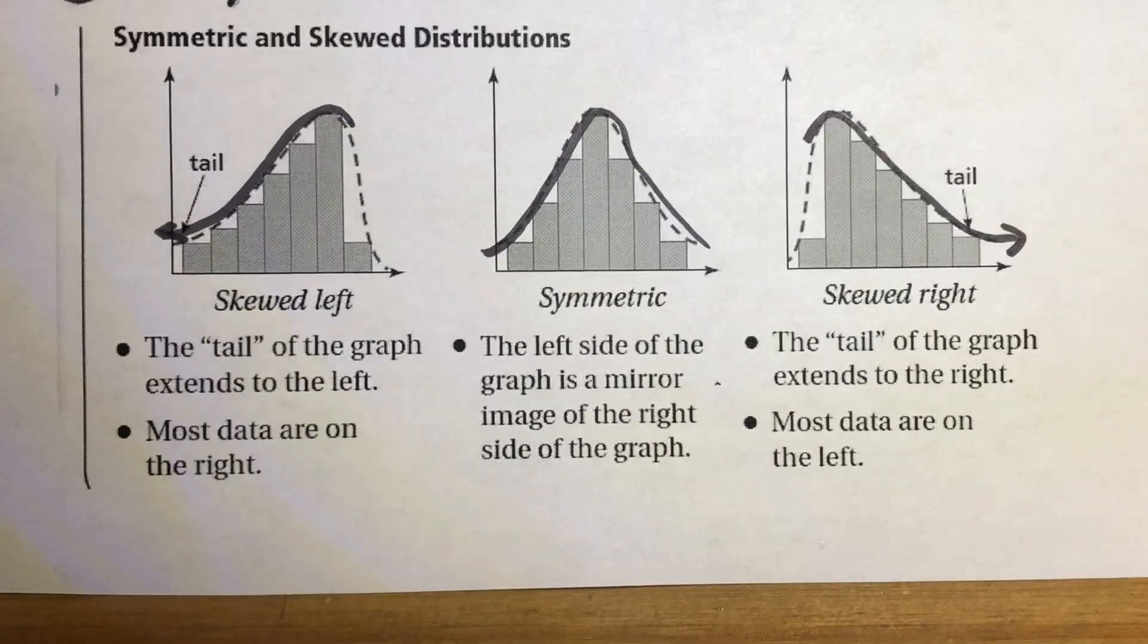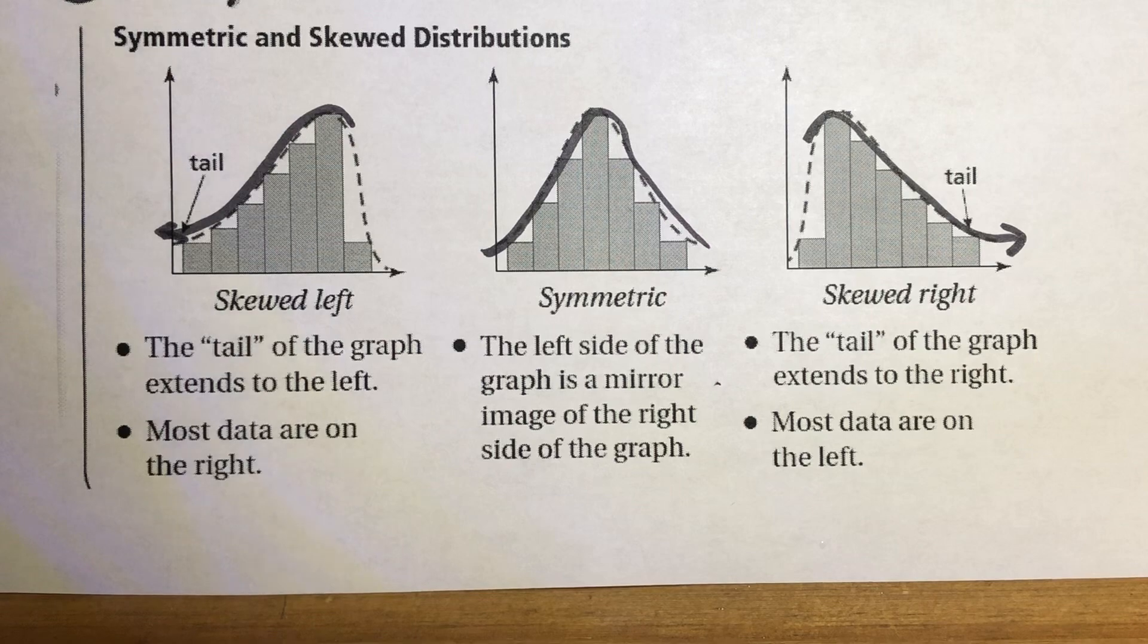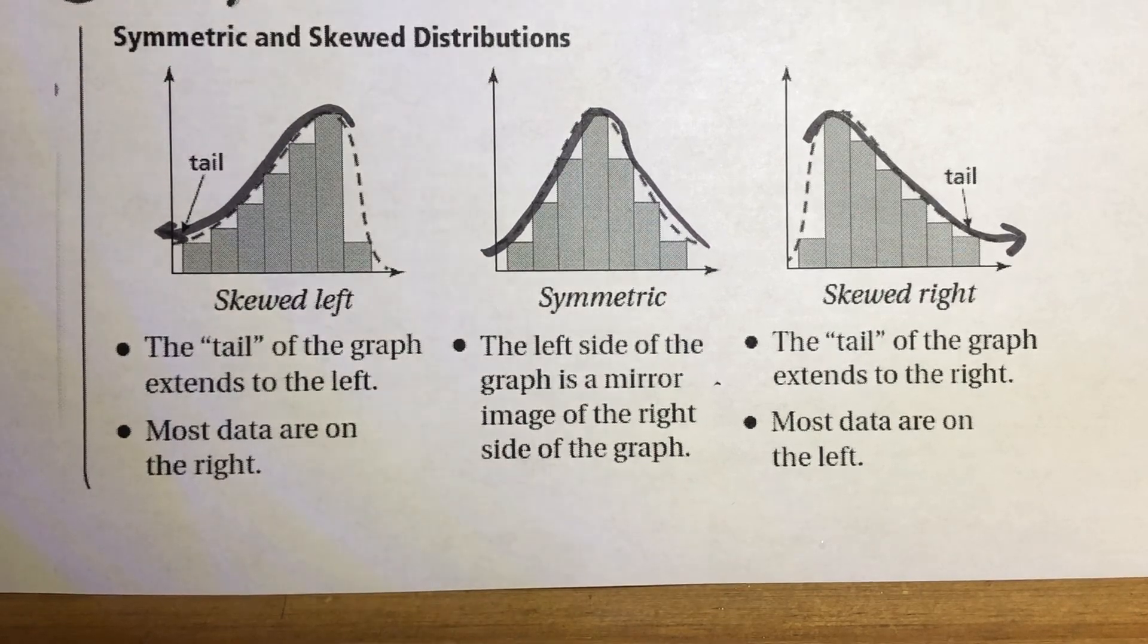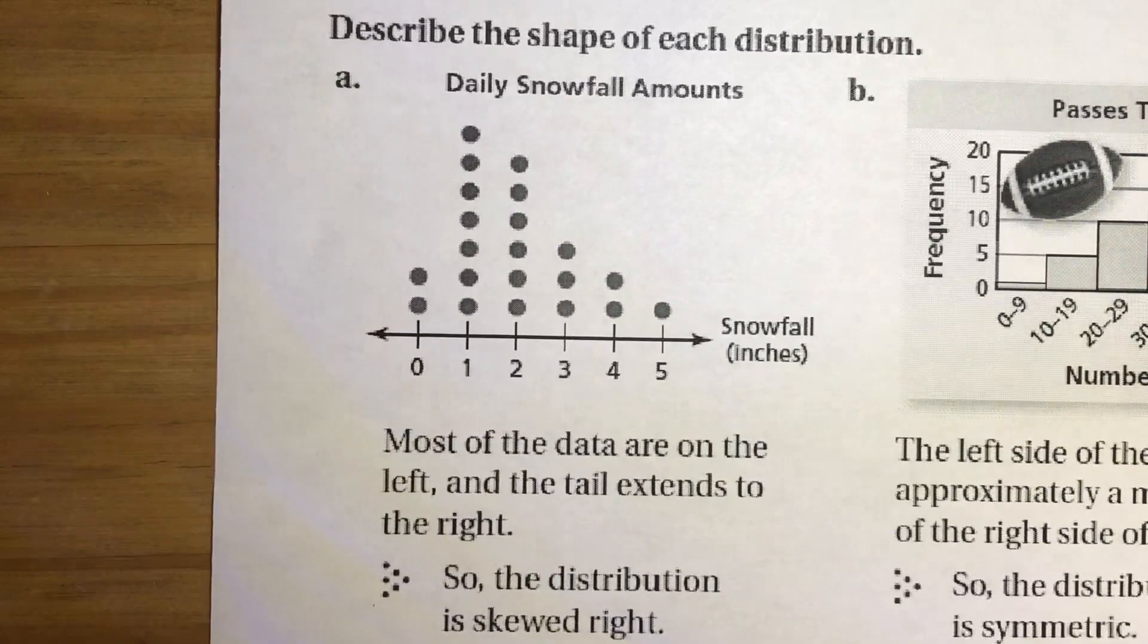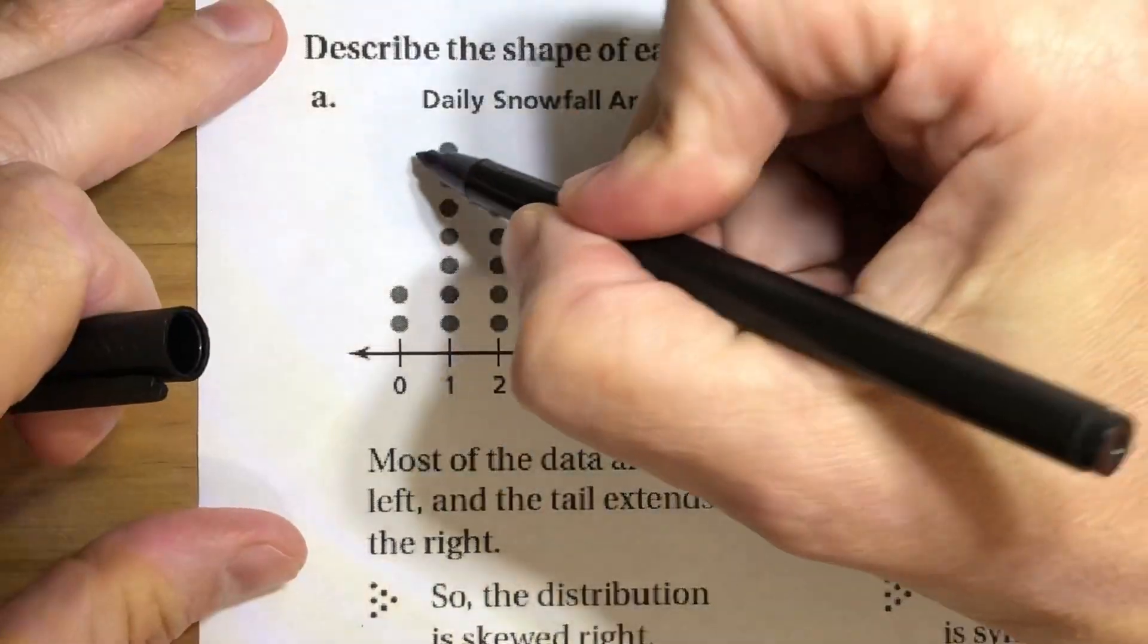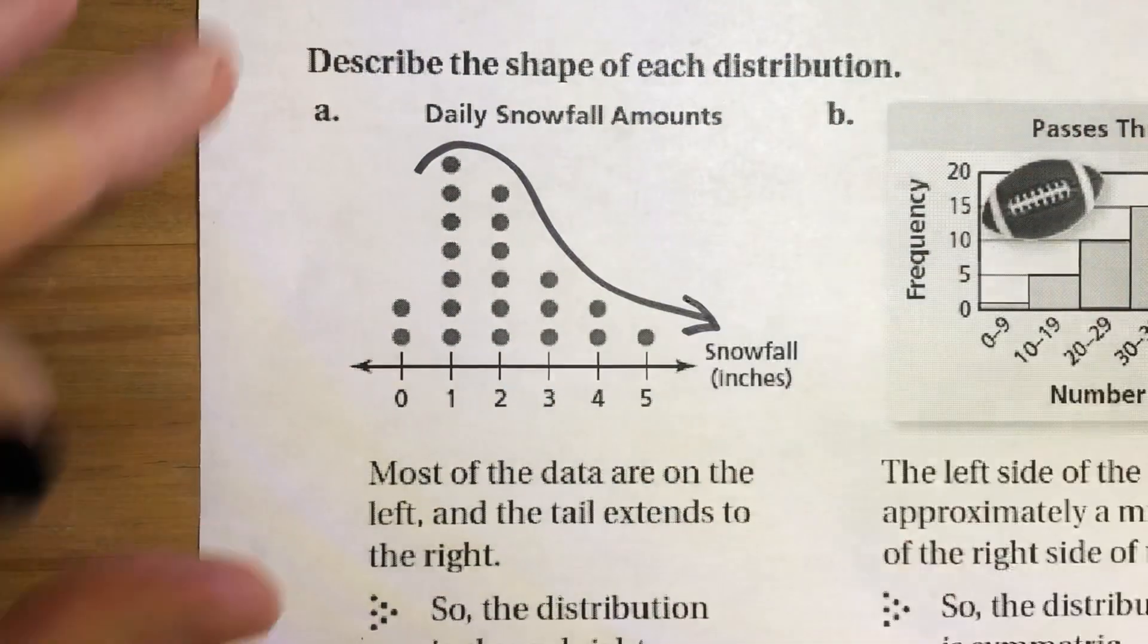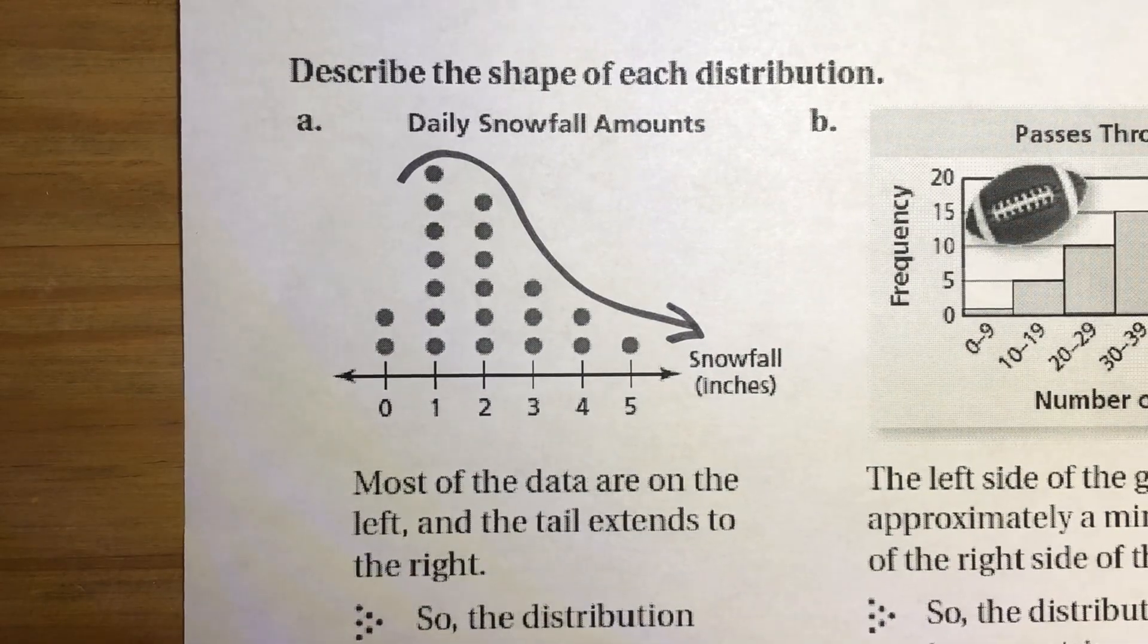So again, some people can mix up the skewed because they think where the data is is the direction they should say, but it's actually where the data kind of crumbles off is where the direction would be. So here's a couple of examples. Here's a dot plot. So this data, if you look carefully, most of the data is on the left, but the tail extends to the right. So this data is skewed right.